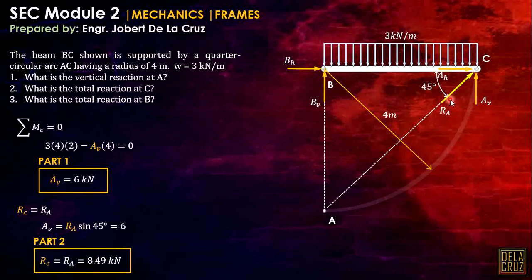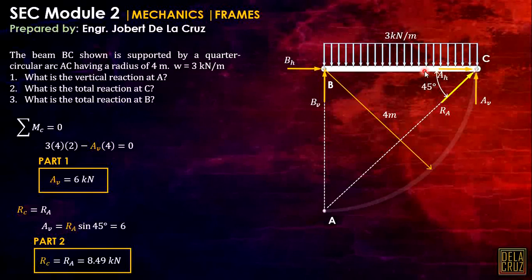Now for the total reaction at B: member BC is not a two-force member because it has a load applied between its body — a distributed load along its length. Since it is not a two-force member, we must calculate BH and BV separately.